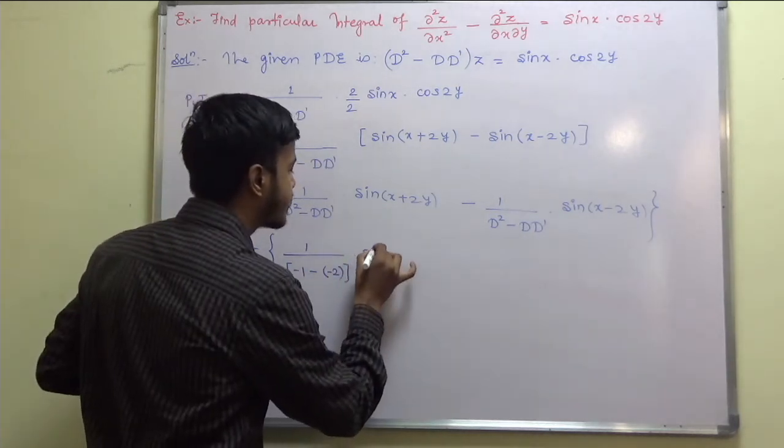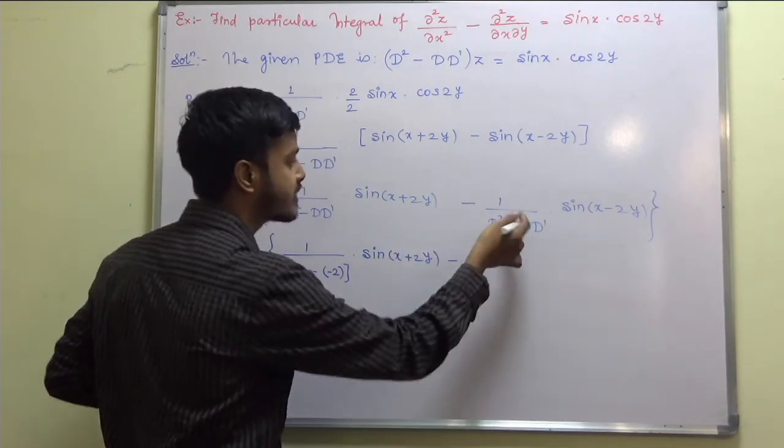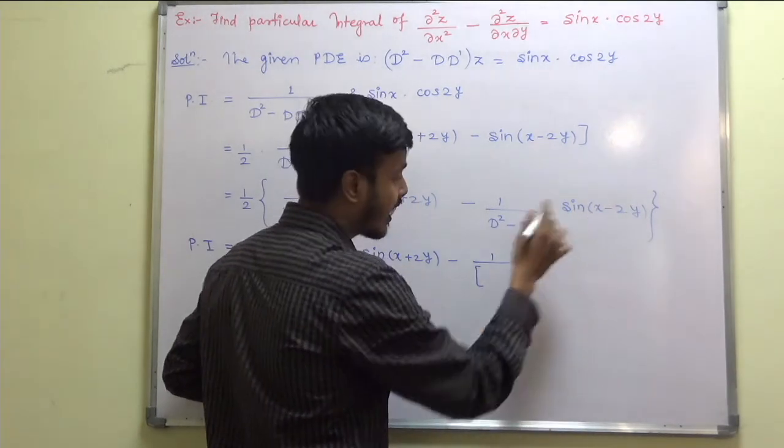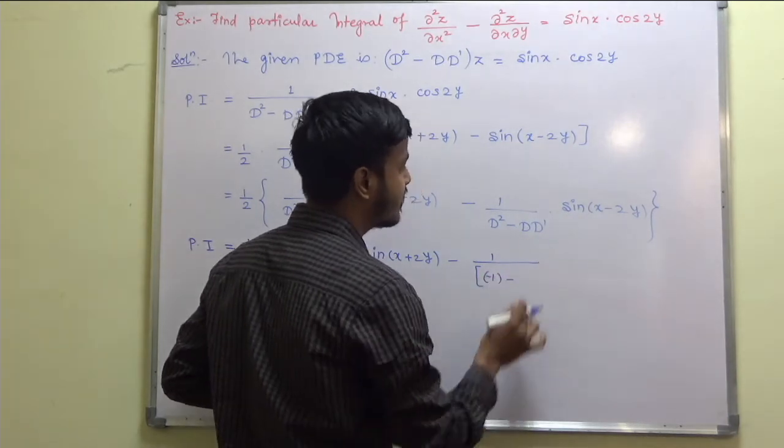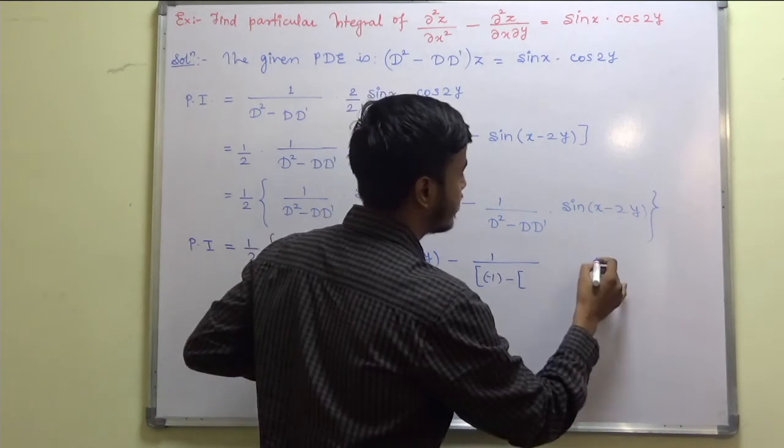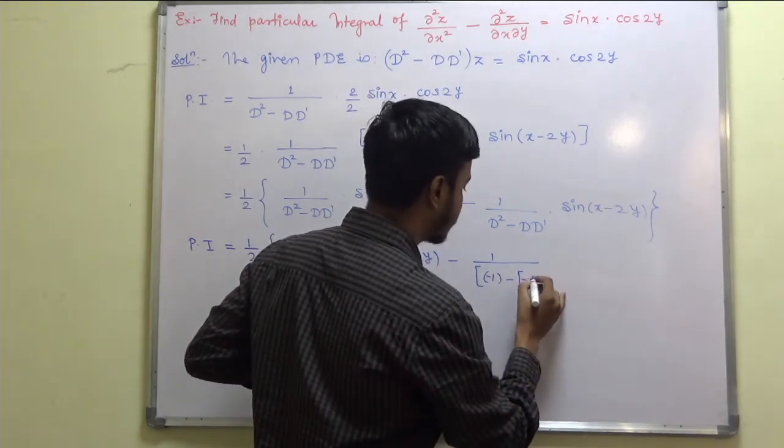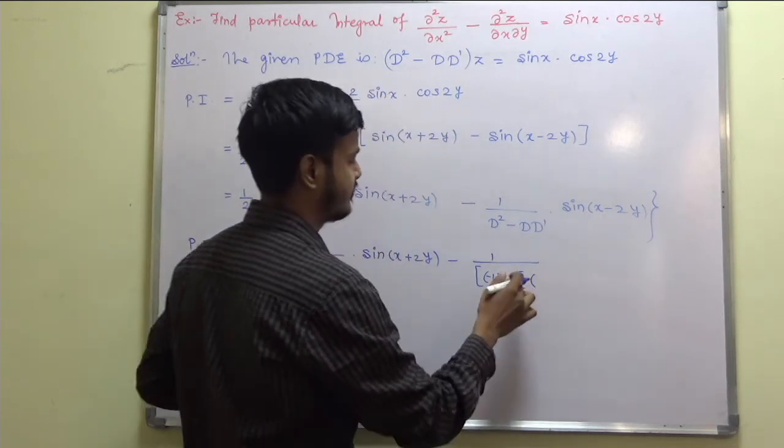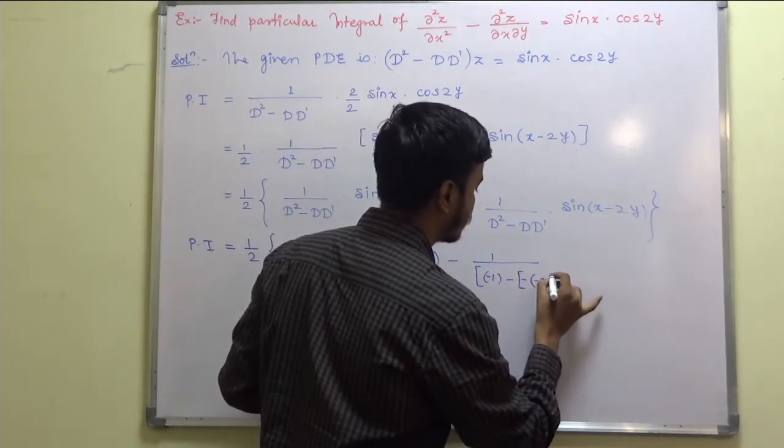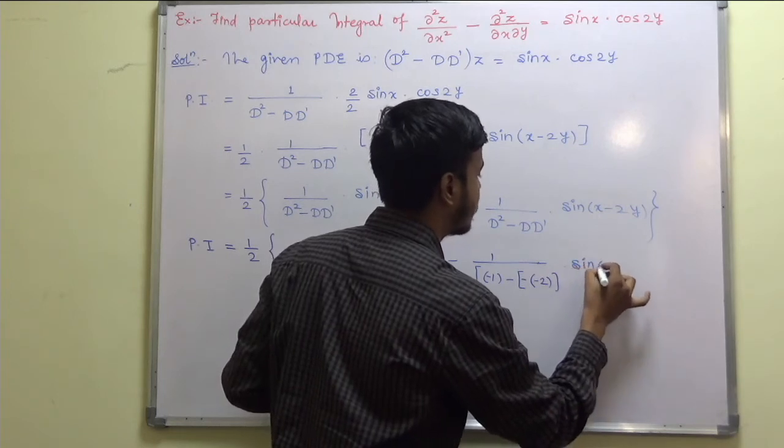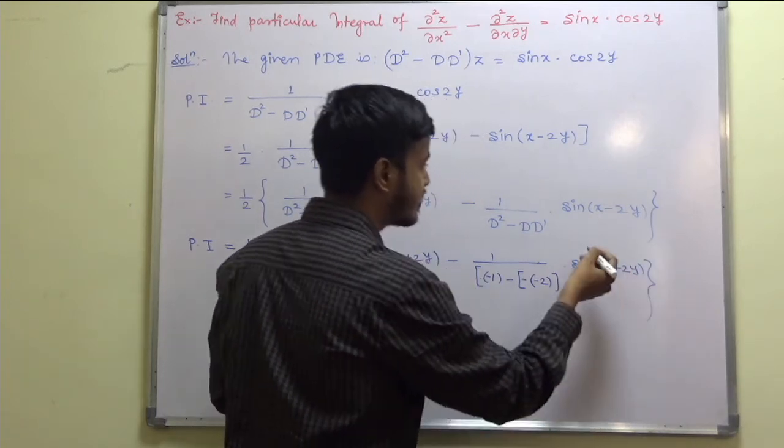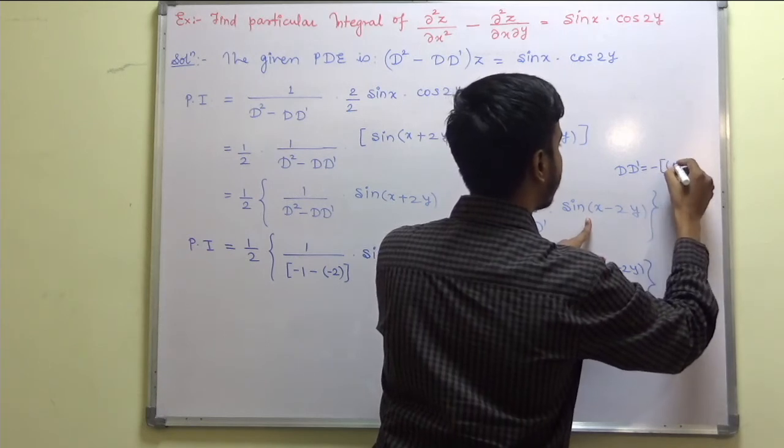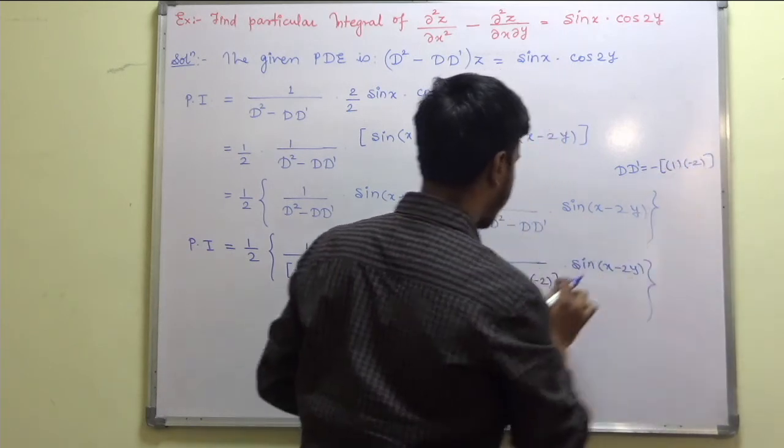Now for this, what is D square? Coefficient of X square. So this is minus 1 minus D D dash. So what is D D dash? This is 1, D dash minus 2. So this is minus of 1 into, sorry, minus of minus, so this would be minus 2 into sine of X minus 2Y. So it is just like D into D dash is equal to minus outside, then it is like 1 into minus 2, so minus minus plus 2.